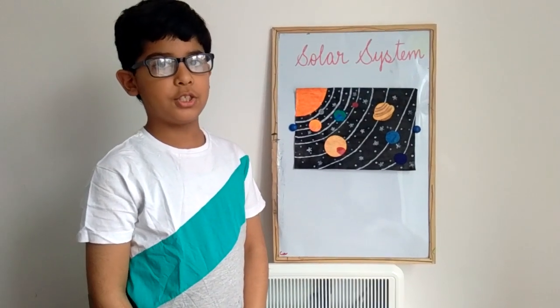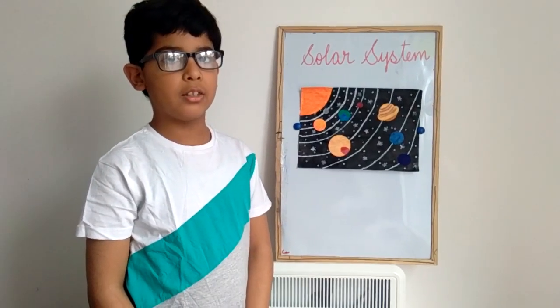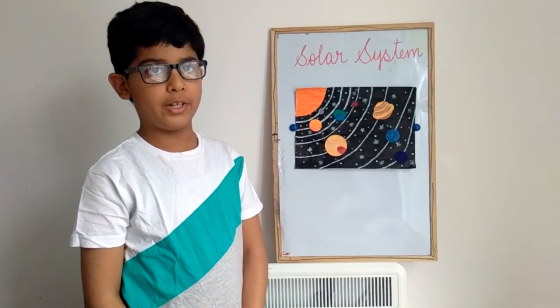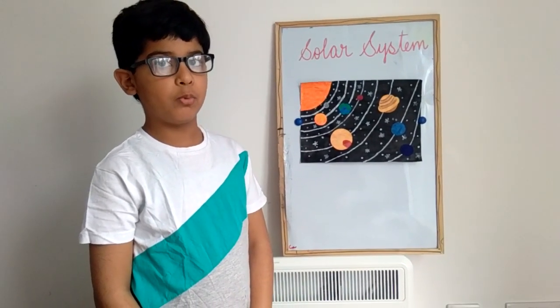The next planet is Uranus. Uranus is the lightest planet in the outer planets and the coldest in the outer planets. It has 27 moons.